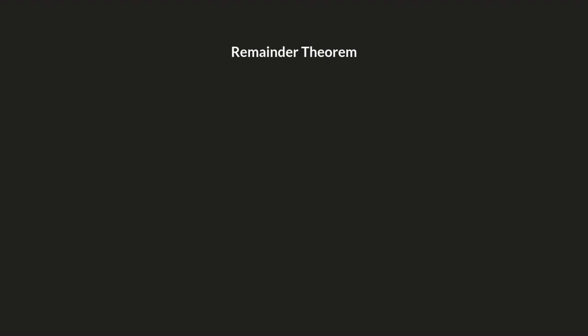Let's talk about the statement of the remainder theorem. If a polynomial f of x of degree n, where n is greater than or equal to 1, is divided by x minus a, till no x term exists in the remainder, then f of a is going to be the remainder.